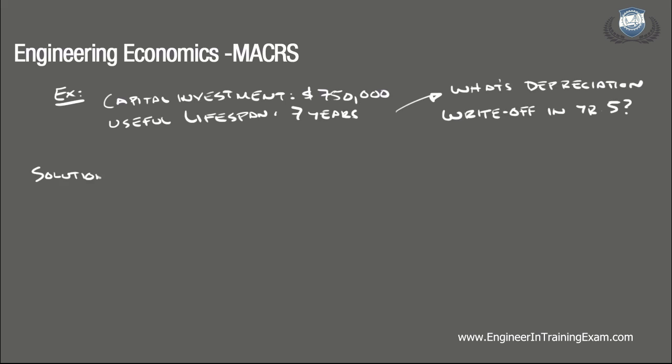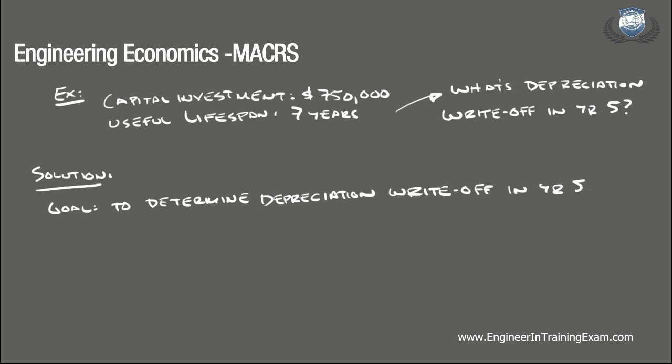Here's the solution. The goal is to determine what the depreciation write-off will be in year 5 after making this specified capital investment. Recall that depreciation is the systematic allocation of the cost of a capital cost over its useful lifespan. To determine the depreciation charge for any year within the useful lifespan, we can refer to the formula on page 115 of the NCEES Supplied Reference Handbook for the Accelerated Cost Recovery System, which states that D sub J is equal to some factor times C, where D sub J is the depreciation in year J and C is the cost of the piece of equipment.